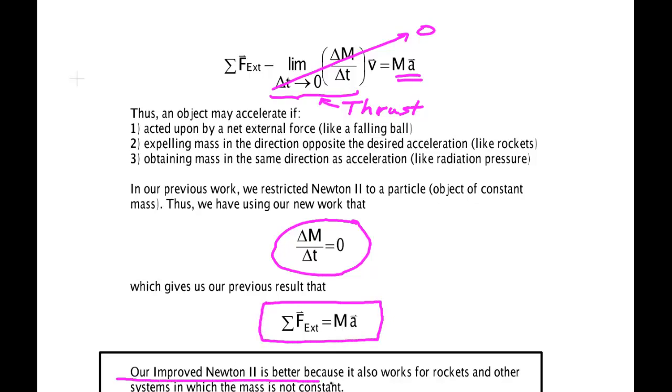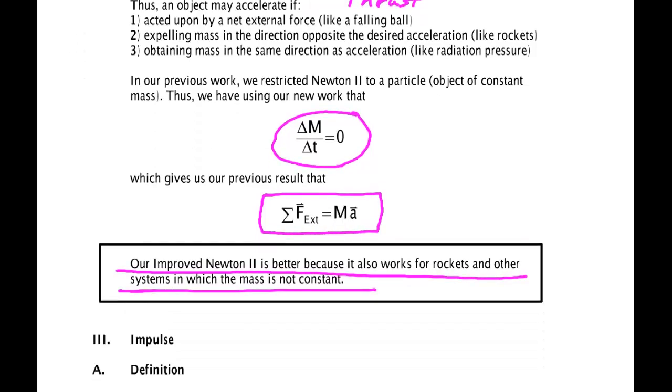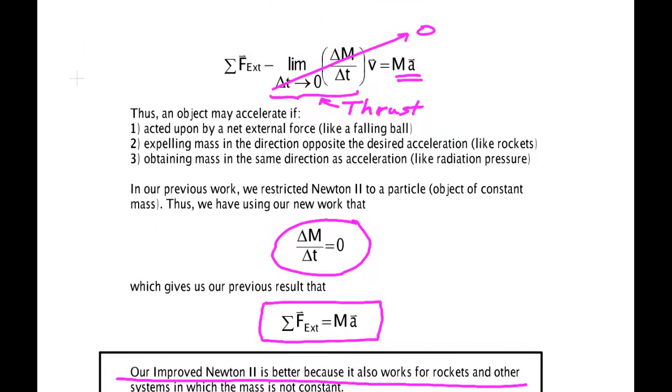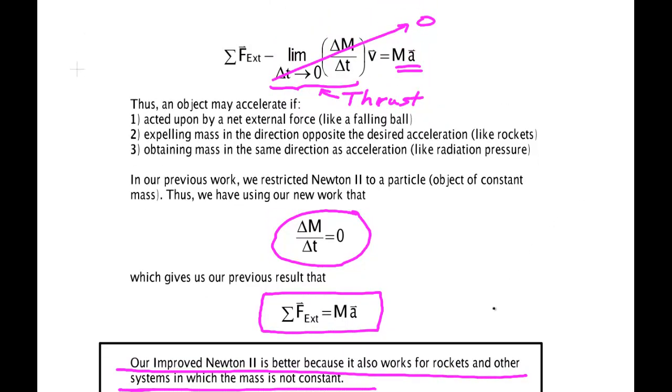So our Newton 2 is improved because it now works for rockets, jet engines, and other things for which their mass is not constant. And it is the new fundamental law of the universe. So Newton said the sum of the external forces is equal to the momentum and is in the direction of the momentum as impressed, or I should say the change in momentum with respect to time. Alright, that's enough for this particular section. We'll go and talk about impulse in the next video.